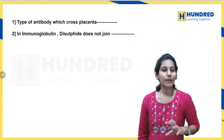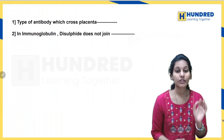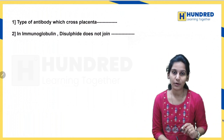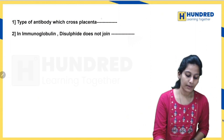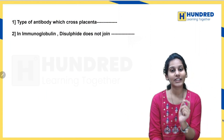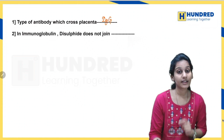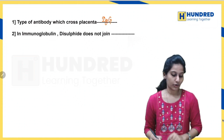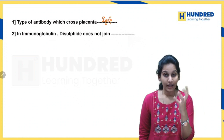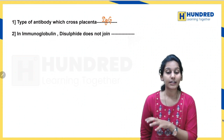For exam purposes: the type of antibody which crosses the placenta is IgG — the gamma antibody. Also, in an immunoglobulin, disulfide bonds do not join two light chains to each other. The disulfide bonds join one heavy chain to another heavy chain, and one heavy chain to one light chain.